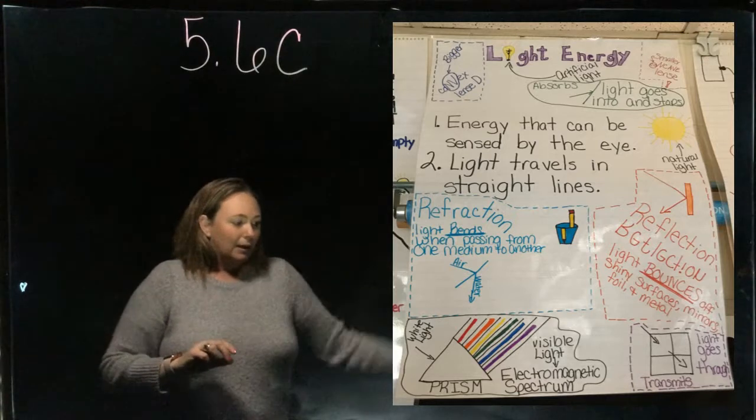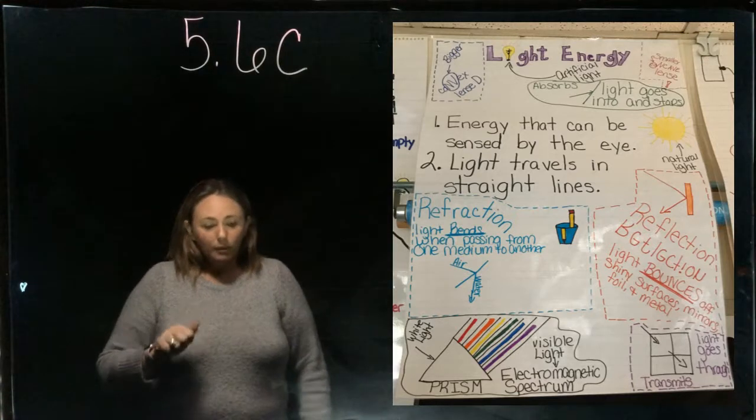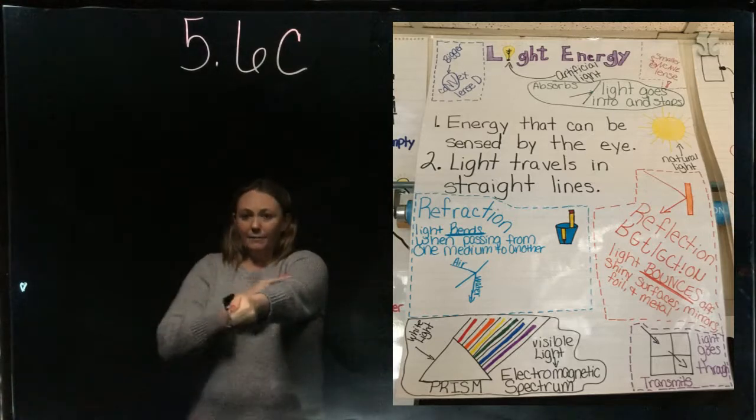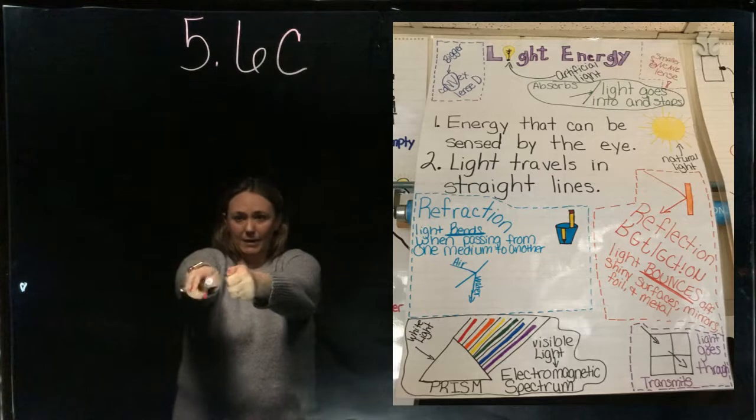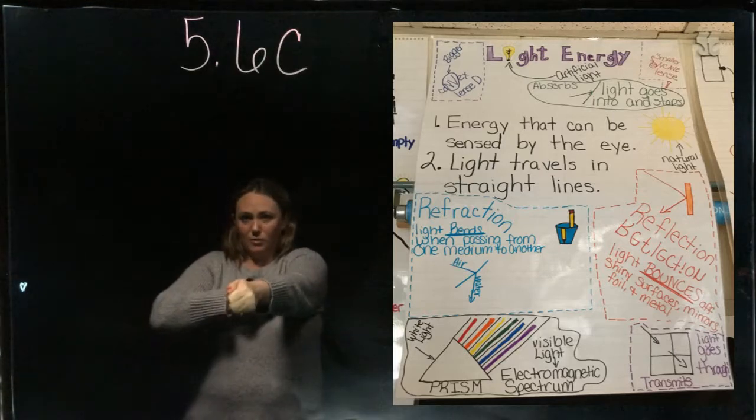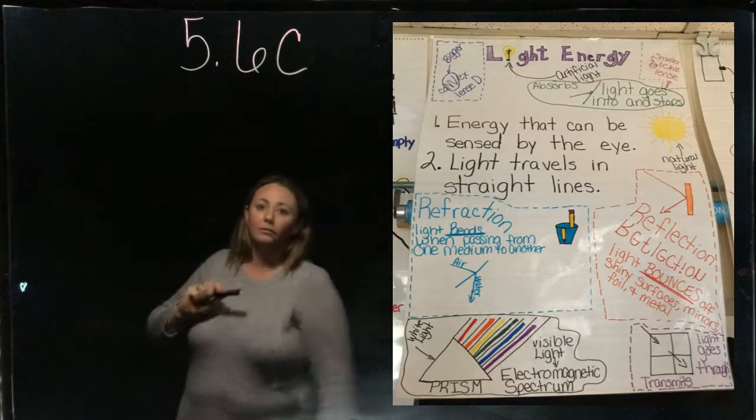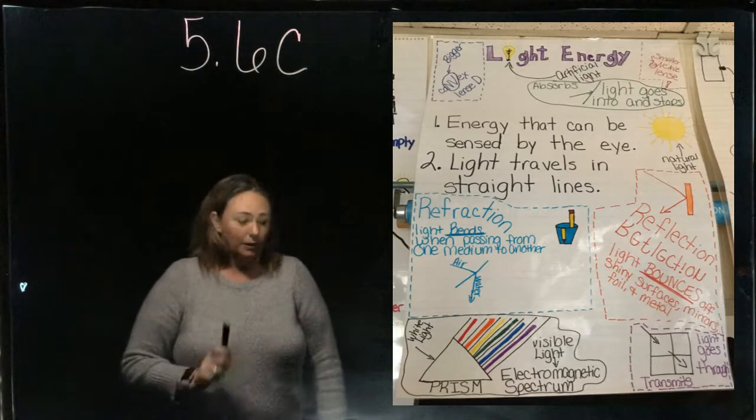Let's talk about real quick: whenever we're shining lights like a pointer, if I shine it straight and it hits an object, it's gonna come right back to me straight. If I hold it at an angle, it's gonna reflect back at an angle. So remember that if you see those kinds of questions.